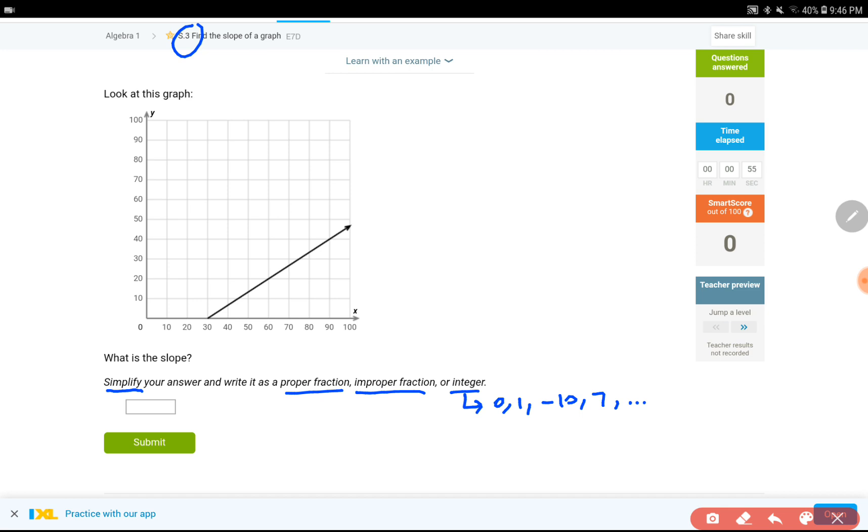Okay, so for this slope, what I'm going to use when you have a graph given, the simplest way I believe is using the rise and run and dividing those two numbers. For this, you'll need two points on the line, such as, let me show you a bad example first.